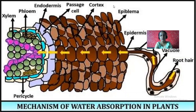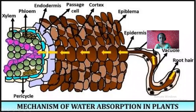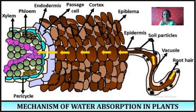This is a structure of root as well as root hair. This shows a section of a root with one root hair. The root hair is absorbing substances here. This is the vacuole and these are soil particles. This is the epidermis — the outermost layer of a root. The outermost layer of cells in a plant body, whether stem, leaf or root, is the epidermis.